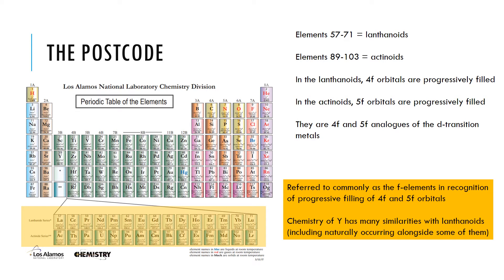It's sometimes found in textbooks that yttrium is discussed in conjunction with these elements, because yttrium has quite a similarity in terms of its chemistry to some of the lanthanoids and does occur naturally alongside quite a few of them. So we may see throughout the module a discussion of the chemistry of yttrium as well.